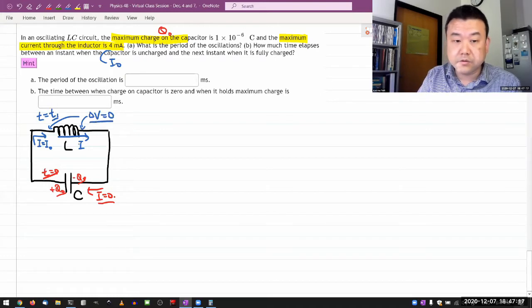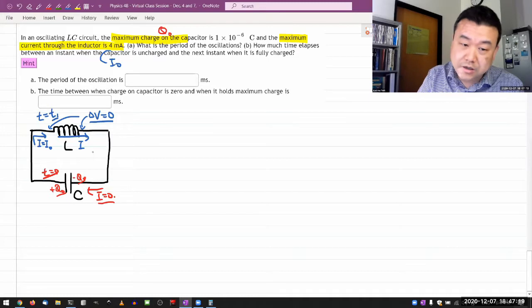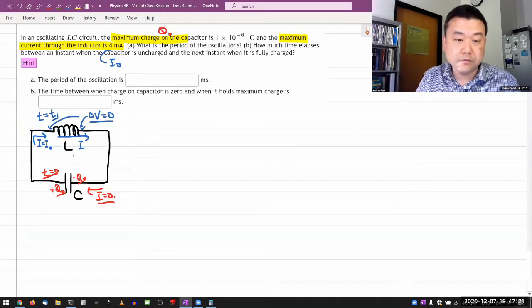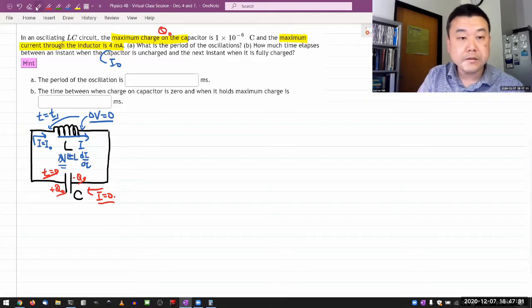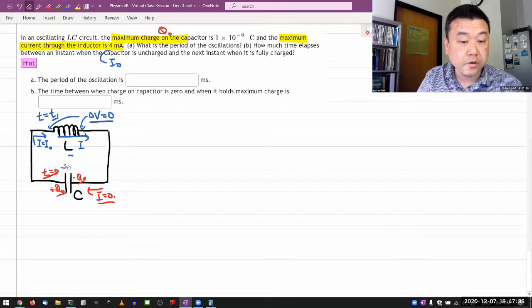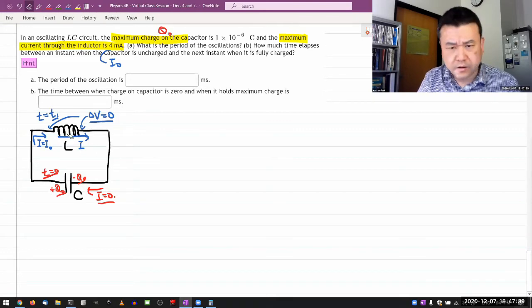Because when current is maximum, it's not changing, which means from the relationship for the inductor, the voltage difference is L di dt, the voltage difference is equal to zero. And this also means the charges stored on the capacitor would be zero. So that's at another different time.